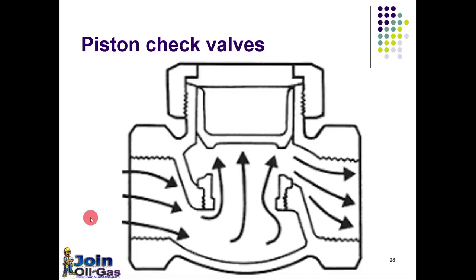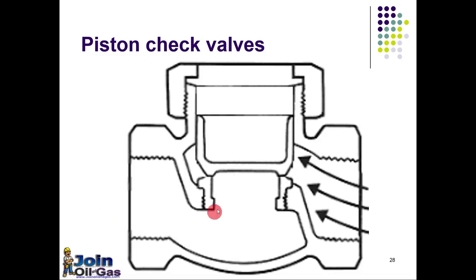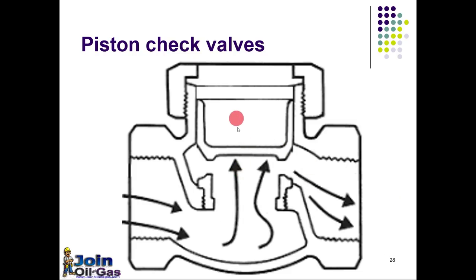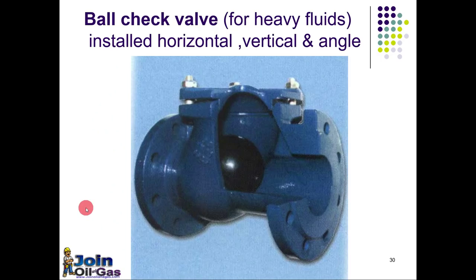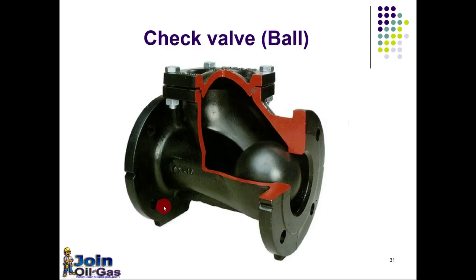This is the animation of the piston check valve — the piston is lifted and there is flow; whenever the flow tries to reverse, the piston closes. Here you can also see the ball check valve, mostly used for heavy fluids and installed horizontally, vertically, or at an angle. Inside there is one ball: when the liquid flows forward the ball is lifted up and there is flow; whenever the flow tries to reverse, this ball settles down and stops the reverse flow.